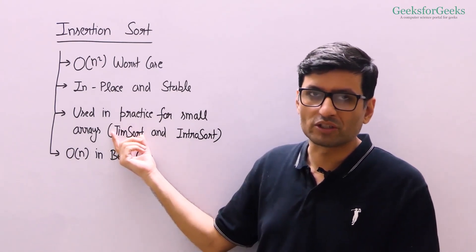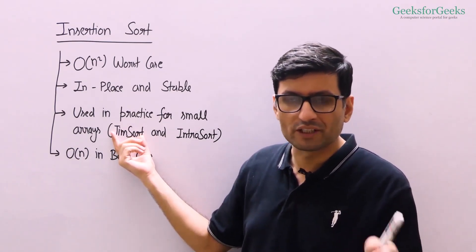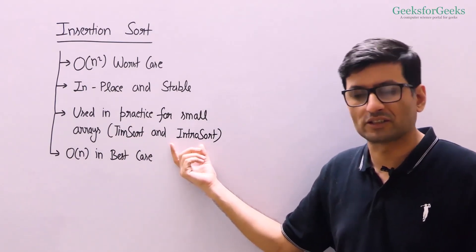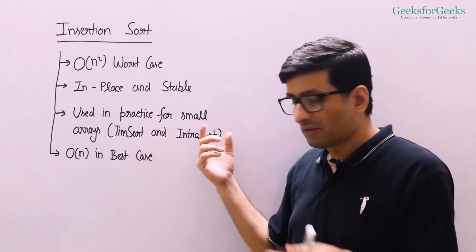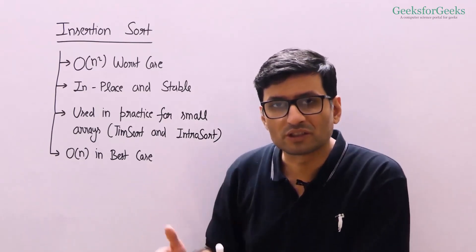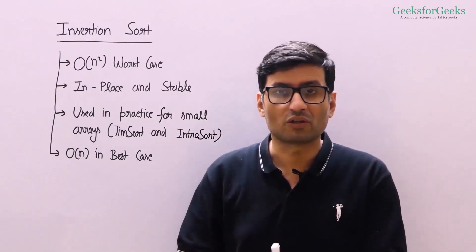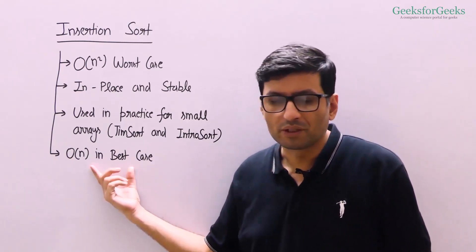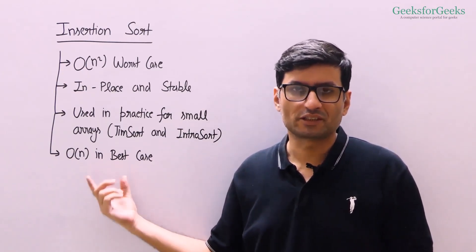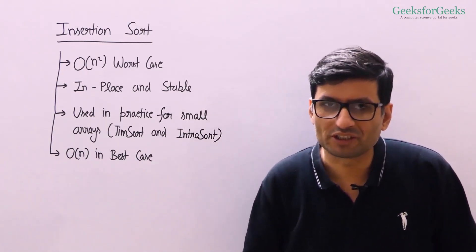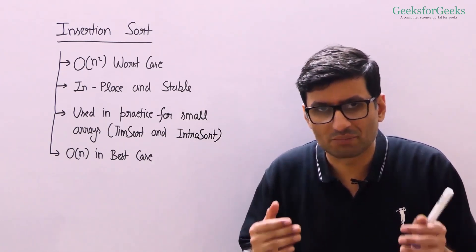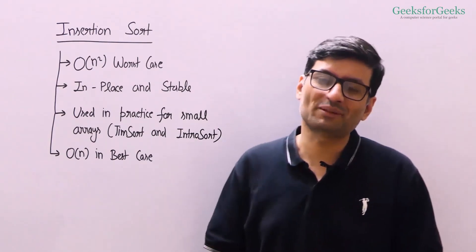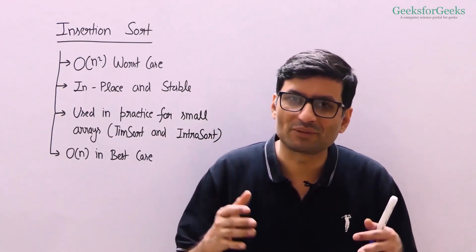For example, Timsort uses merge sort and insertion sort. Introsort uses heap sort, quick sort, and insertion sort. Both algorithms use insertion sort when the input is small or becomes small. Insertion sort requires O(n) time in the best case. The best case happens when the input array is already sorted, and the worst case happens when the input array is reverse sorted.